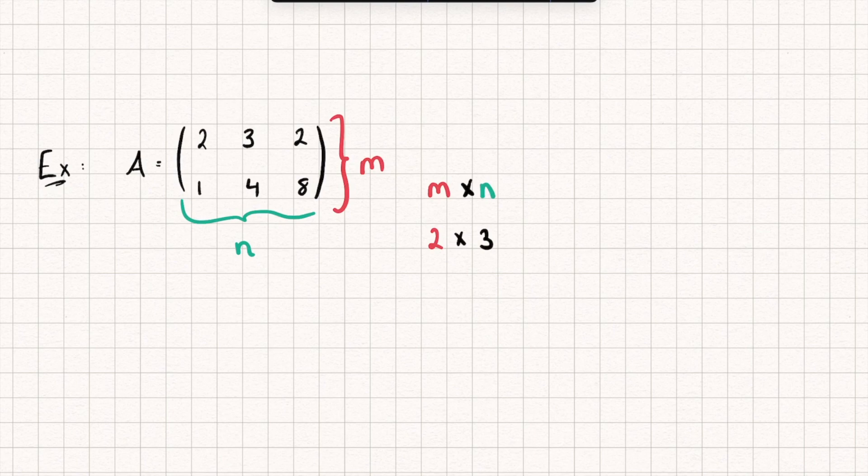Now, the numbers inside the matrix, you can see these numbers here, these are called the elements of our matrix. They don't always have to be numbers. They could be functions. They could be expressions. They could be anything we like. But in this case, we're using numbers.